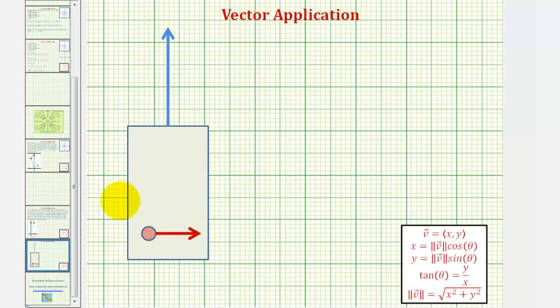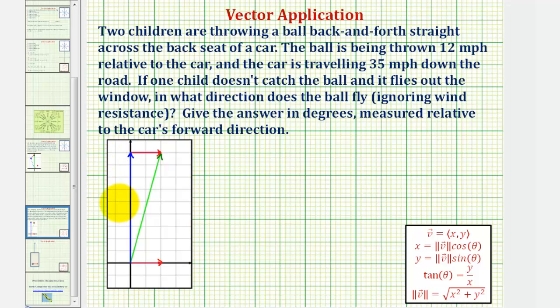Going back to the first slide, let's call this vector c, because it represents the speed and direction of the car, and we'll call this vector b, because it represents the speed and direction of the ball. The sum of vectors c and b will give us the speed and direction of the ball flying out the window.